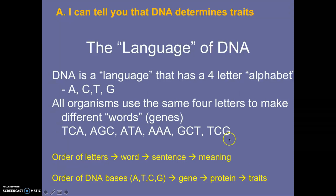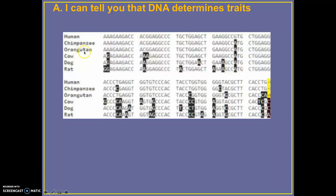Here's an example comparing humans to chimps, orangutans, cows, dogs, and rats. Notice the bases — for the most part they're very similar, but in some places they're going to be different. As you go down the line, the rat obviously has a lot more differences to the human than the chimp. I hope you found this information helpful, and I will see you on the next video. Thank you for listening.